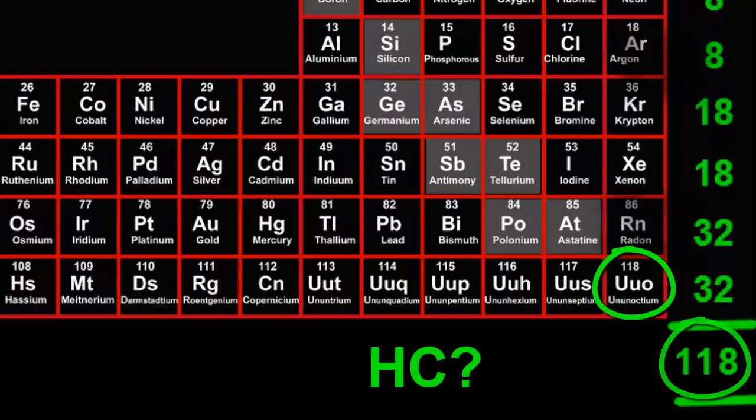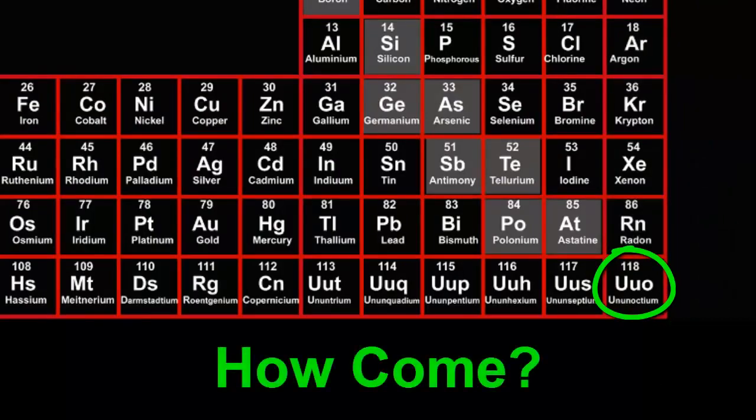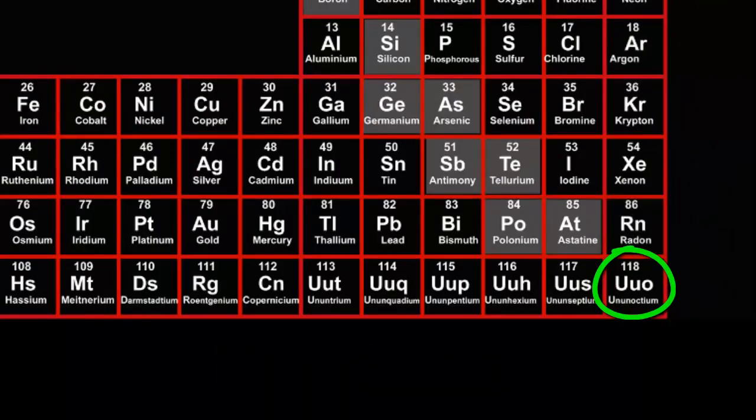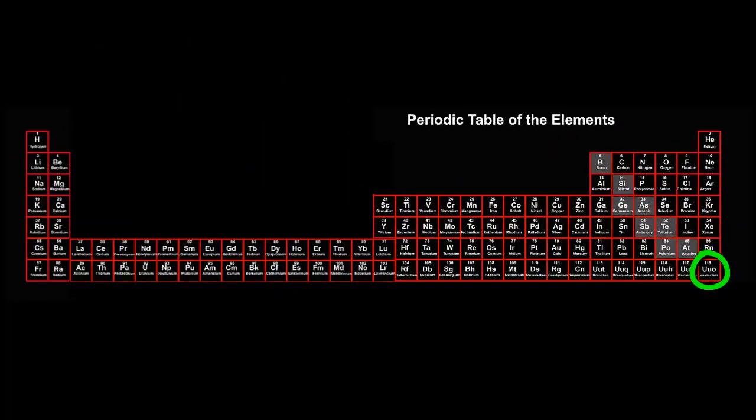How come? Aren't there meant to be only 92 elements, with uranium being the last one?